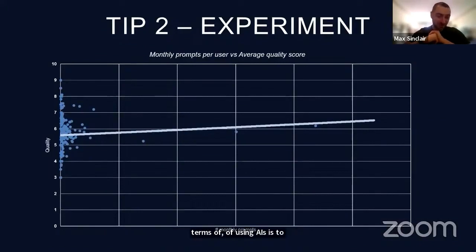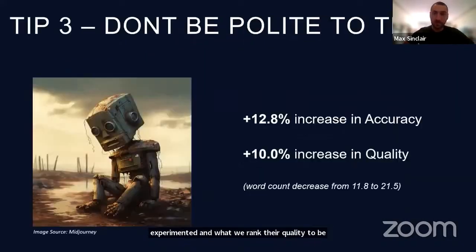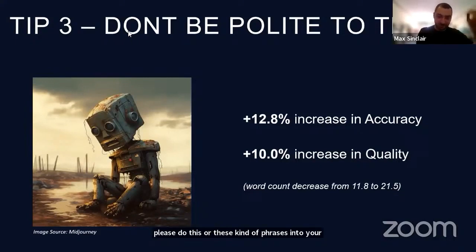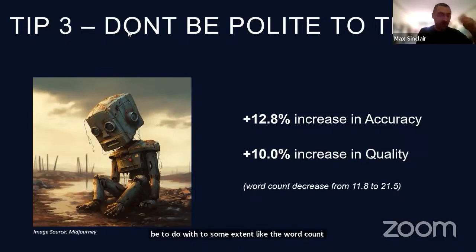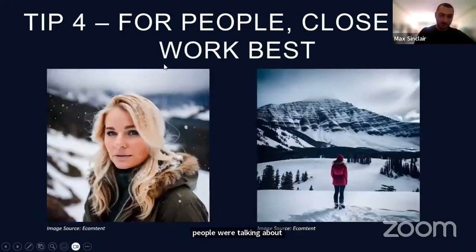Tip two is to experiment. We saw a clear relationship between how many monthly prompts customers did in our tool and what quality rating they achieved — the more they experimented, the better. Tip three is not to be polite to AI. We saw that removing words like 'please' from your prompts led to a 13% increase in accuracy and a 10% increase in quality. It may relate to word count reduction, but the type of words used mattered more than prompt length.